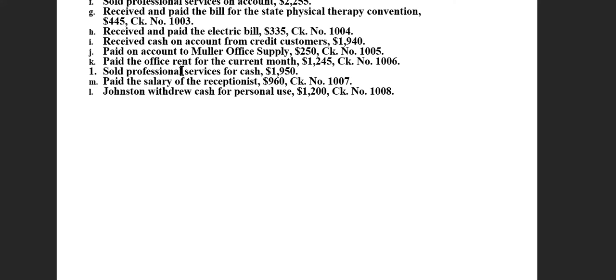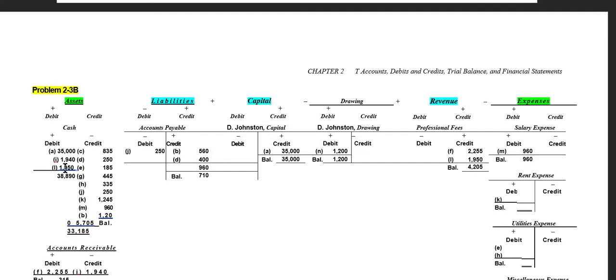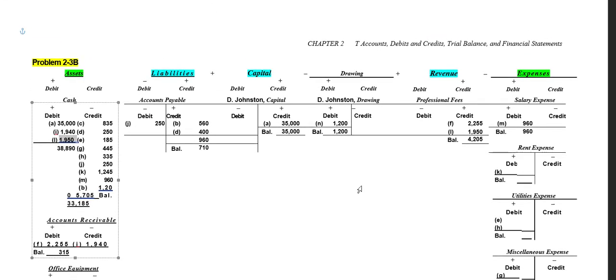We sold professional services for cash — $1,950. Unlike an earlier transaction where we expected to receive money later, here we provided the service and received cash immediately. We increase our asset cash by debiting cash $1,950 and record an increase in revenue by crediting professional fees $1,950, since revenue is increased with a credit.